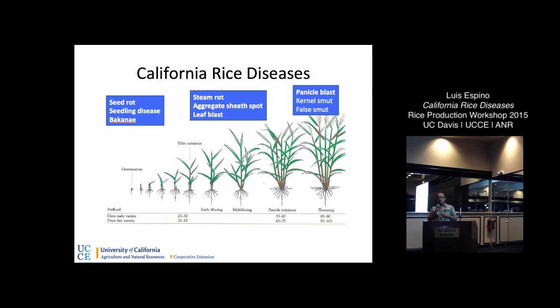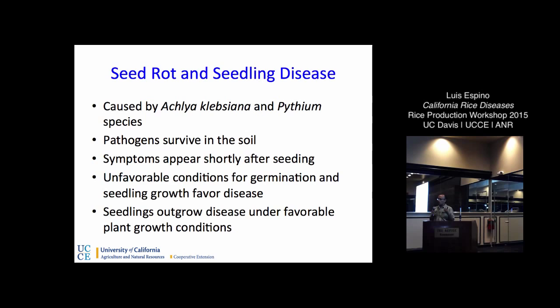We'll start with what happens early in the season. Seedling disease and seed rot can attack seeds and seedlings right after planting. These are pathogens that live in the soil, and when the field is flooded, some of these pathogens produce spores that can actually swim — zoospores — and move to infect seeds and seedlings. These diseases are favored by anything that slows down the growth of rice seedlings, especially cool conditions where seeds are just sitting in the water not growing.